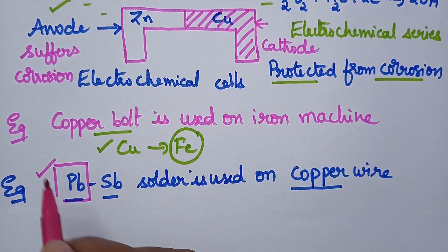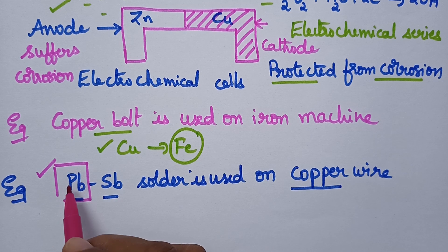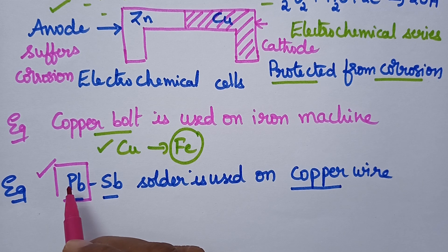This is all about galvanic corrosion, also known as bimetallic corrosion, along with its examples. If you liked the video, don't forget to like, share, and subscribe.